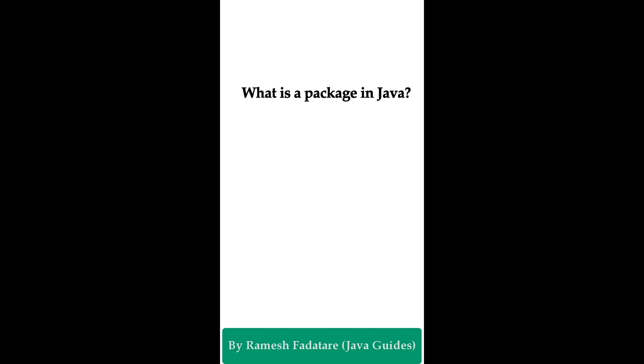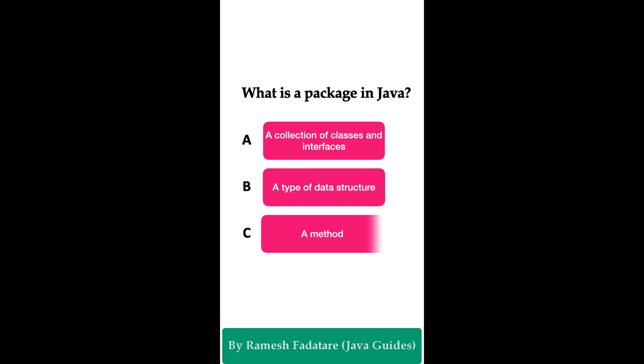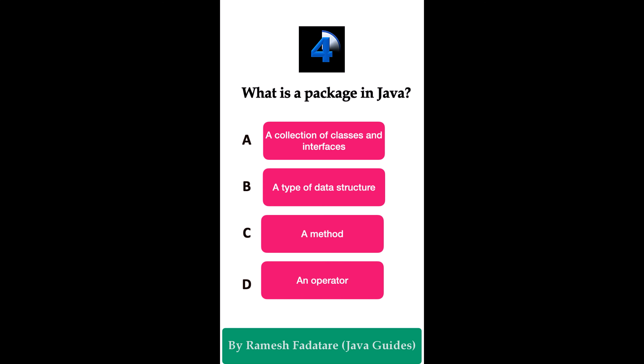What is a package in Java? Option A: a collection of classes and interfaces. Option B: a type of data structure. Option C: a method. Option D: an operator. The correct answer is option A. A package in Java is a namespace that organizes a set of classes and interfaces — think of it as a folder in a file directory. By using packages, you can group related classes together, making your code more organized and modular.